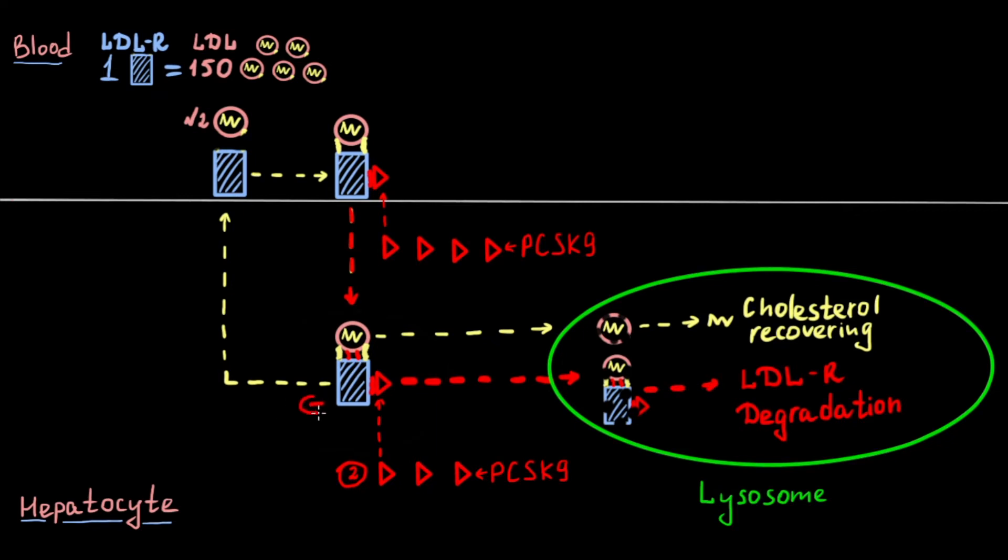As a result, PCSK9 reduces the number of receptors on the cell surface by inhibition of receptor recirculation. Considering that one low-density lipoprotein receptor can carry 150 molecules of low-density lipoproteins, decreasing the receptor's number leads to severe decrease in uptake of low-density lipoproteins by hepatocytes and to huge accumulation of low-density lipoproteins in the blood, which leads to subsequent progression of atherosclerosis.